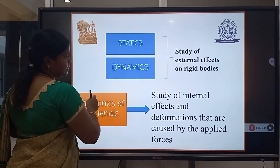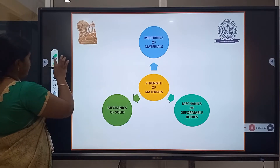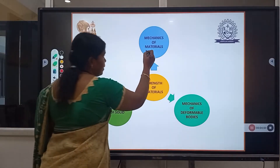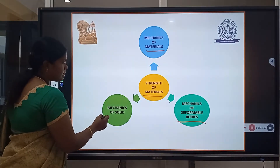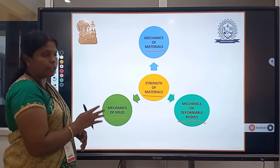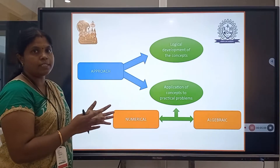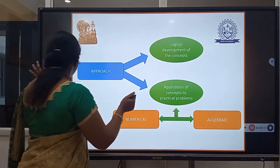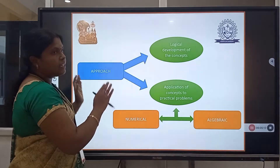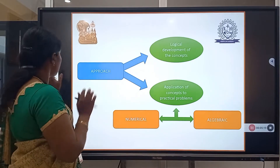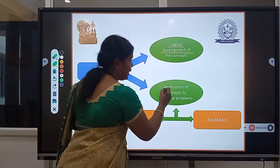These are other terms we use for mechanics of materials. Strength of materials is also called mechanics of deformable bodies and mechanics of solids. These are the terms we are going to use in this unit. The approaches we are going to see in this unit are: logical development of the concepts and application of the concepts. If some forces are applied, the effects will be the logical approach.